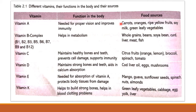Vitamin A is found in certain foods. If we want good eyesight and strong immunity, we should eat those foods. Vitamin B complex — B1, B2, B3, B5, B6, B7, B9 and B12 — helps in metabolism, which is a process where foods are converted into energy.